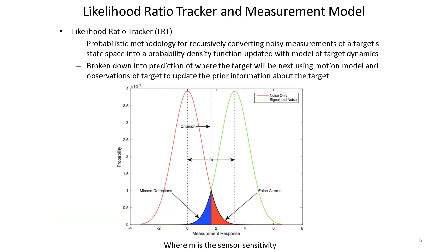When we're moving around the likelihood network, we're updating it using something called a likelihood ratio tracker. If there's no target present when we're taking measurements, there's only noise in our sensor. But in the case where there's actually a target present, there's a signal and there's noise. So we have a difference between the two signals, with a little bit of overlap as you can see in this measurement response graph. When there's overlap, you have the potential for missed detections and false alarms if you don't have a high enough criterion for detection.